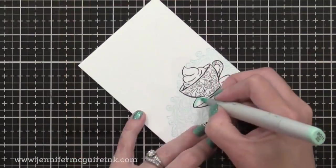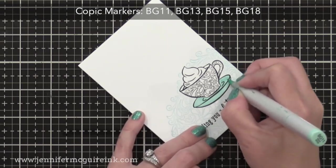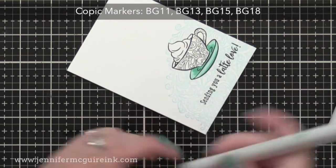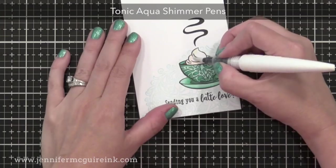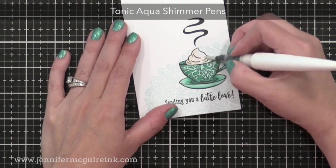Now I did some coloring on this with Copic markers. I'm gonna skip through this because I didn't do anything fancy, but I did include the colors I used there at the top of the screen. You could color this however you wanted with watercolor, colored pencils, any type of markers. I then added shimmer to the whipped cream for a little bit of sparkle.